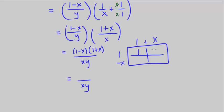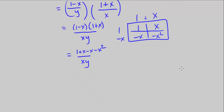1 times 1 is 1, 1 times x is x, 1 times negative x is negative x, x times negative x is negative x². So that's 1 + x - x - x². I can simplify this, and that's just (1-x²)/(xy). And that is my answer in simplified form as a single fraction.